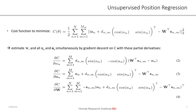So this difference should be minimal. If we sum it up over all points along each line and over all lines, we end up with a cost function that we can minimize in order to estimate the parameters W, alpha, and O simultaneously by gradient descent on C using the partial derivatives given here.